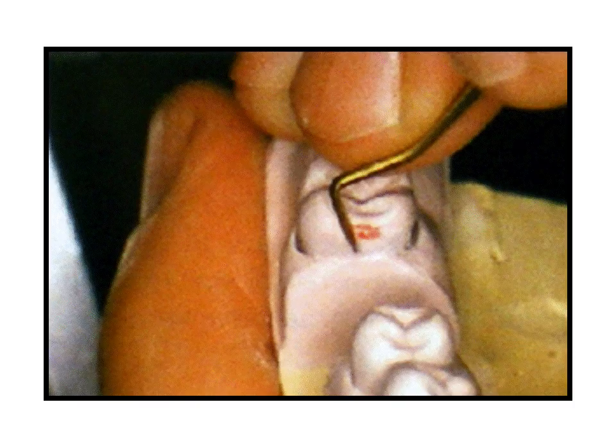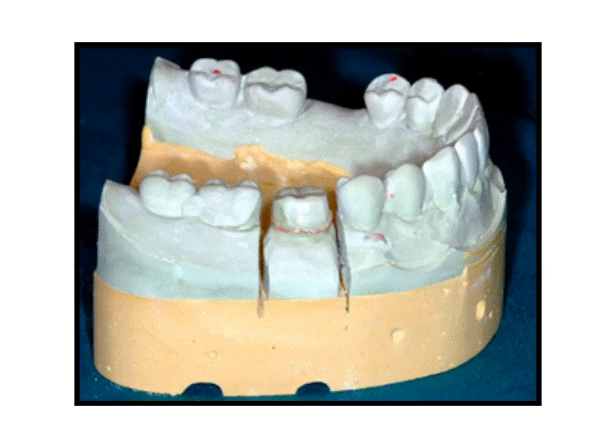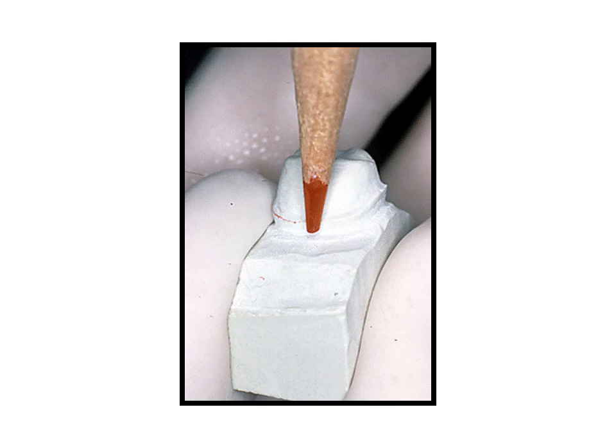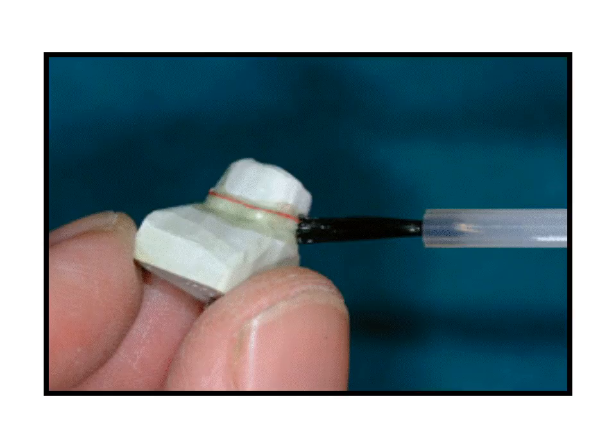To ensure that proximal contacts are not deficient, a small amount of stone is scraped from the adjacent tooth prior to waxing. The die is separated from the stone master cast and is stable, fitting on and off predictably. The margin finish line on the die is marked in red wax pencil — this color provides contrast with the blue wax. Traces of graphite from a regular pencil may cause incomplete casting because it acts as an anti-flux. The die is thoroughly saturated with die lube, and this process may be repeated periodically.